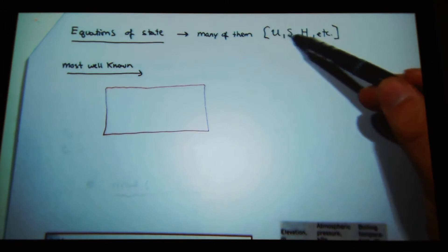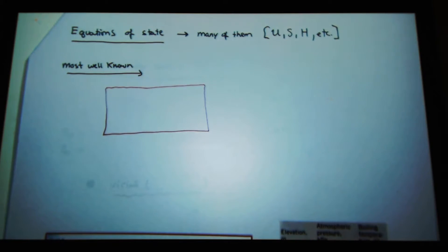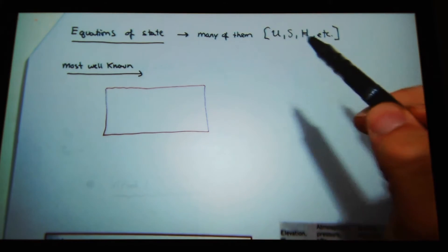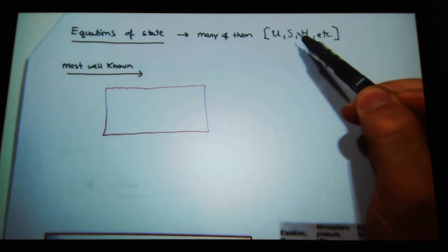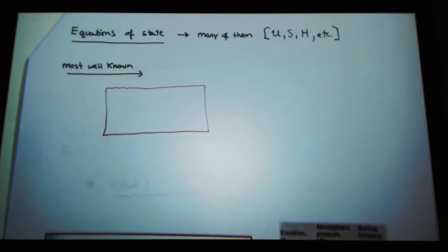If it's an equation of state, what are two properties I need to define it? Temperature and pressure. If I know the temperature and pressure in my system, I can define its internal energy, its entropy, its enthalpy, and many other equations of state.